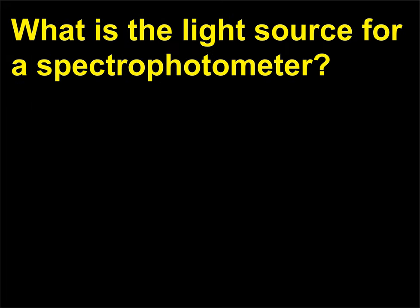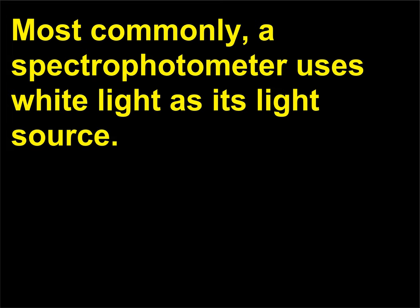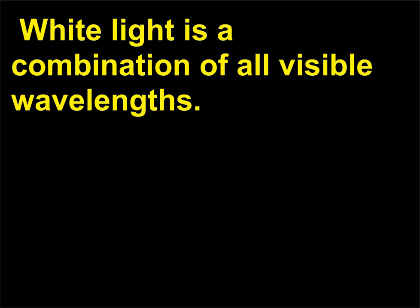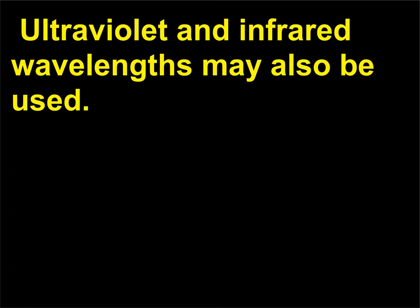What is the light source for a spectrophotometer? Most commonly, a spectrophotometer uses white light as its light source. White light is a combination of all visible wavelengths. Ultraviolet and infrared wavelengths may also be used.